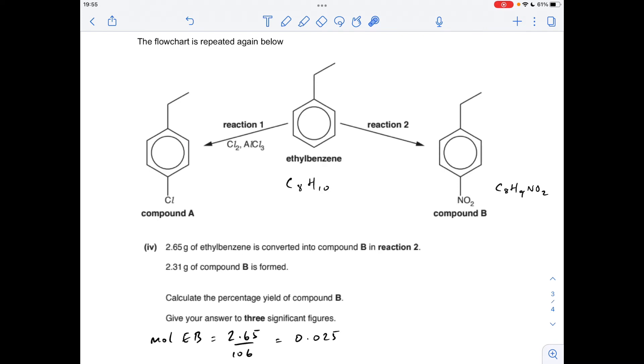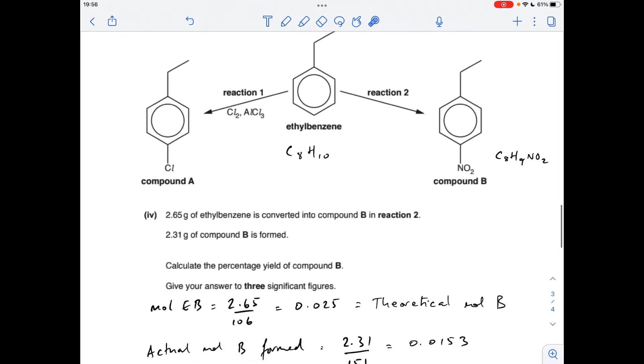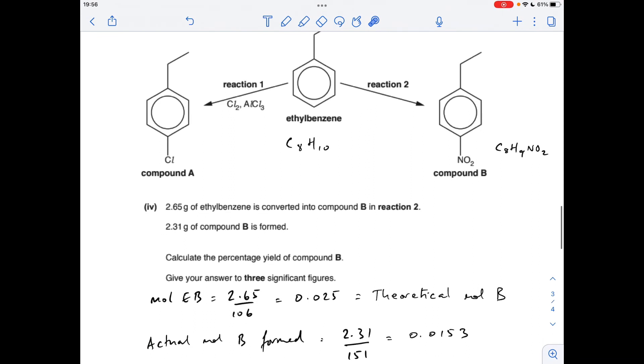Finally, the percentage yield calculation. So the first thing I'm doing is working out the moles of ethylbenzene that we've got, so that's mass over Mr, 0.025. And if you look at the flow chart, we should theoretically make the same number of moles of compound B. So the next thing we do is work out the actual moles of B that have formed, so mass over the Mr of compound B, so we get that many moles.